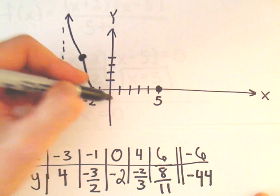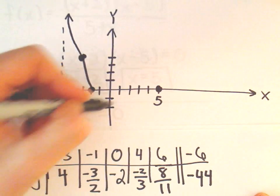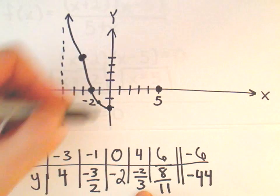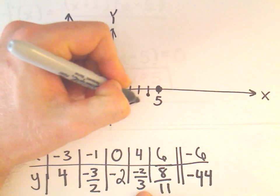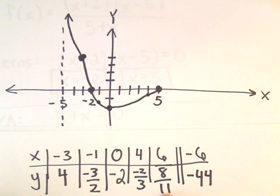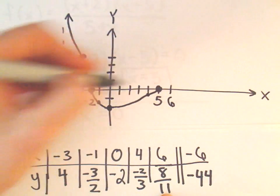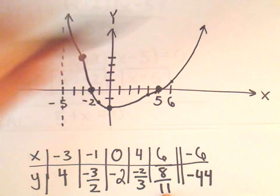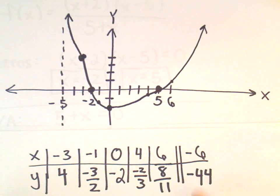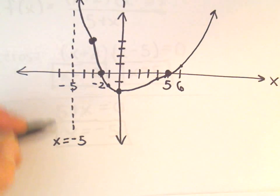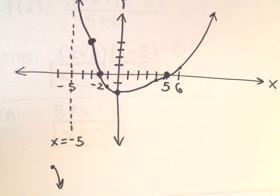So we said at negative 1, we're at negative 3 over 2, so we're roughly down there. At 0, we're at negative 2, so we'll play connect the dots. We said by the time we're at positive 4, we're at negative 2 thirds, so we're getting closer. So it's going to go through and touch at x equals 5. And then we said once we get to positive 6, we're now at positive 8 over 11. And then I think it's going to just keep getting larger and larger and larger. Let's look at one other. So we said if we plug in negative 6, we're down here at negative 44. So we can't really get that value down there, but it's way down there. So to me, it says the graph would have to be spiking down to negative infinity.